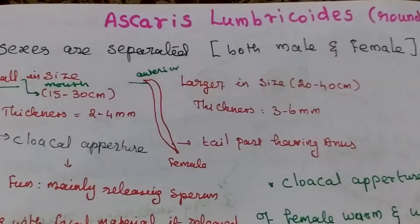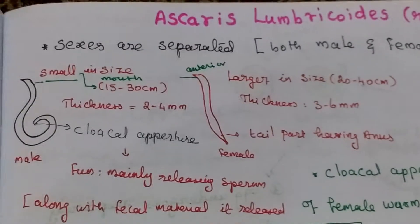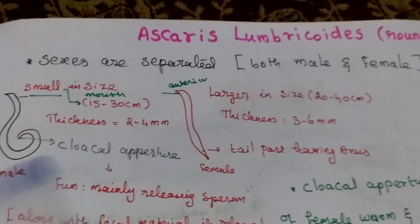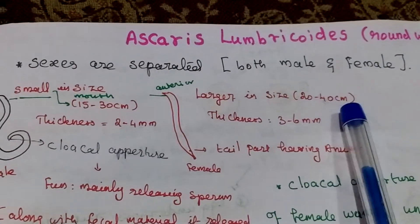Ascaris lumbricoides consists of both sexes, male and female. Size: male 15 to 30 cm, female 20 to 40 cm.